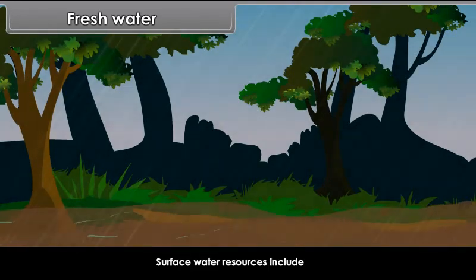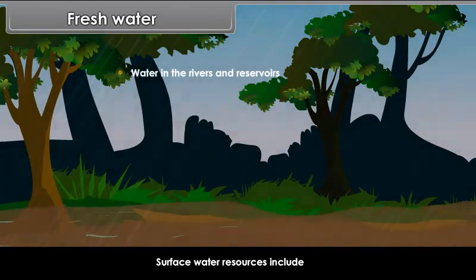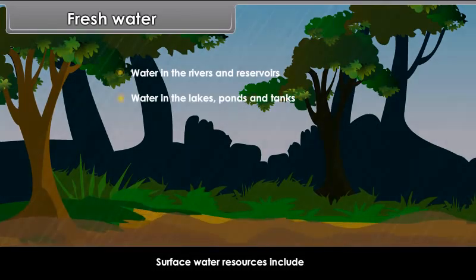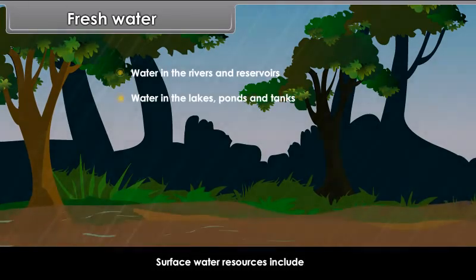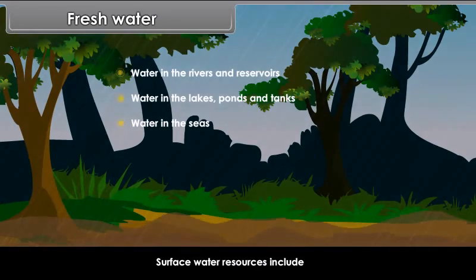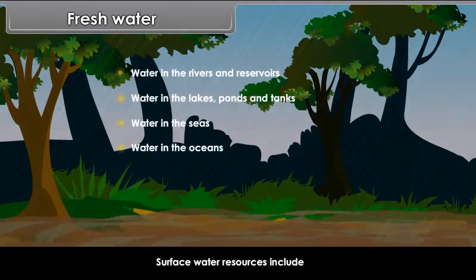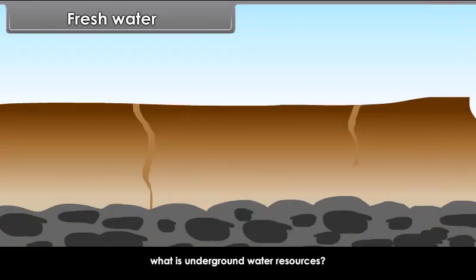Surface water resources include water in the rivers and reservoirs, water in the lakes, ponds and tanks, water in the seas, and water in the oceans.